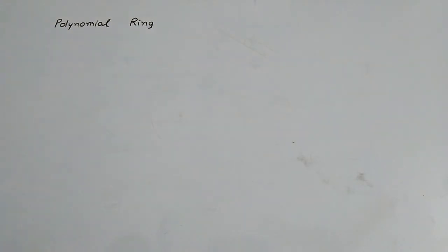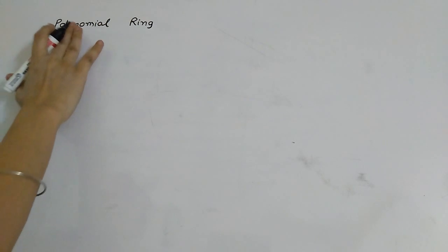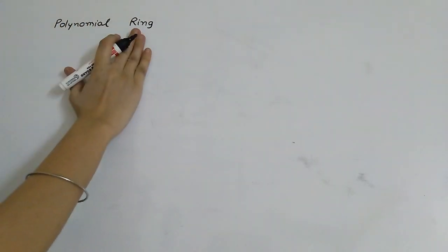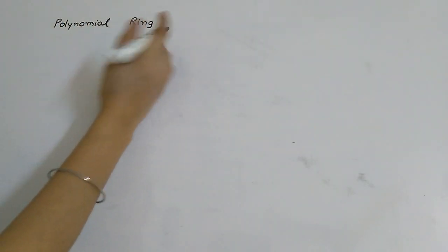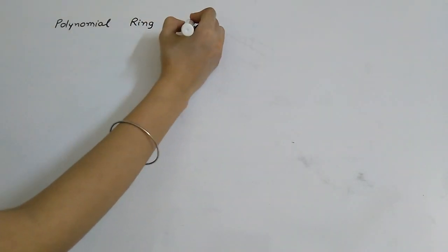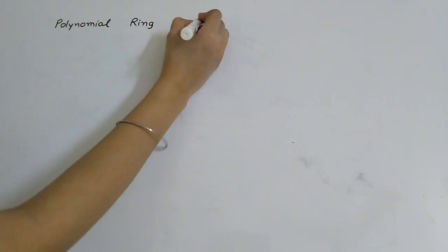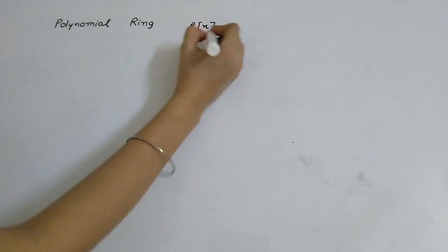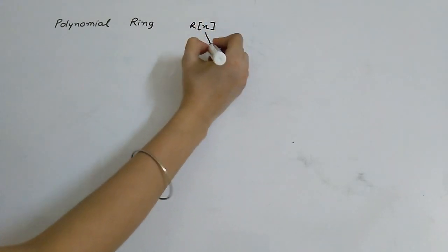Hello friends, welcome to my YouTube channel. In this video we are going to learn about polynomial ring, which is denoted by R[x]. Here we call x the indeterminate.